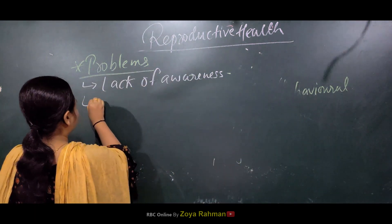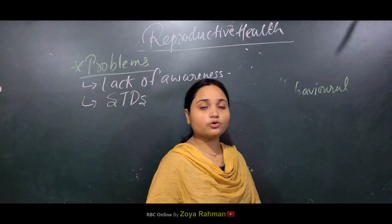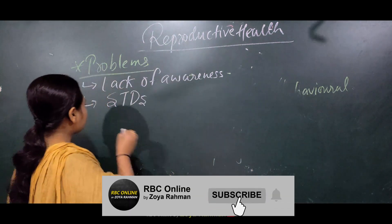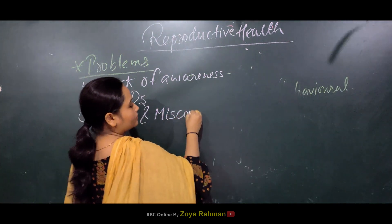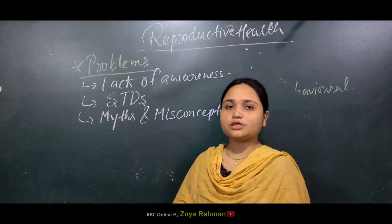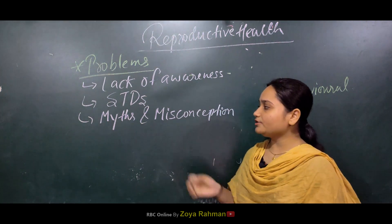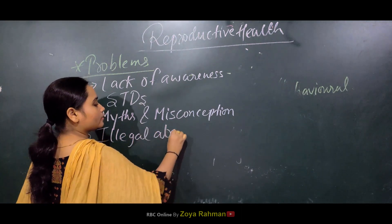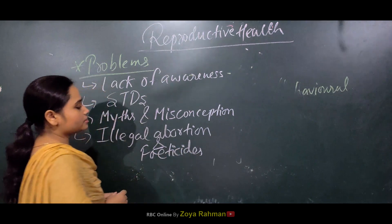The second problem was there were many problems related with STDs - people were not aware of these. Third, there were several myths and misconceptions related to reproductive health, such as misconceptions during pregnancy which led to pregnancy loss and harm to mother and fetus. Additionally, there were problems of illegal abortion and female feticide, which caused the female-to-male ratio to increase.